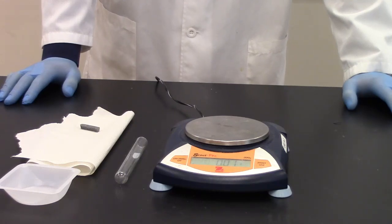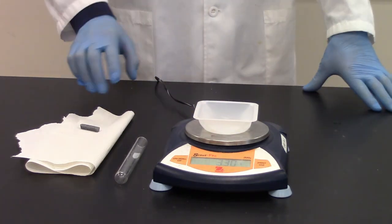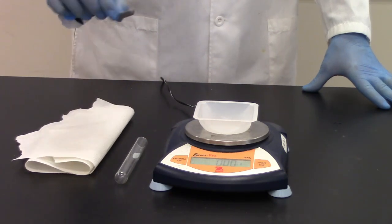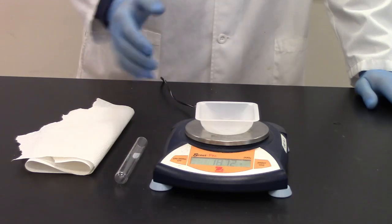My next step is to get a mass of our metal. So I'm going to begin by putting our weigh boat on the balance and I'm going to zero that out. Next I'm going to place my sample on the weigh boat and I'm going to record the mass.